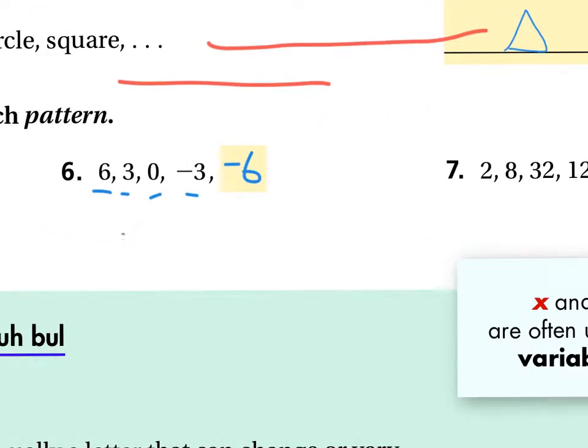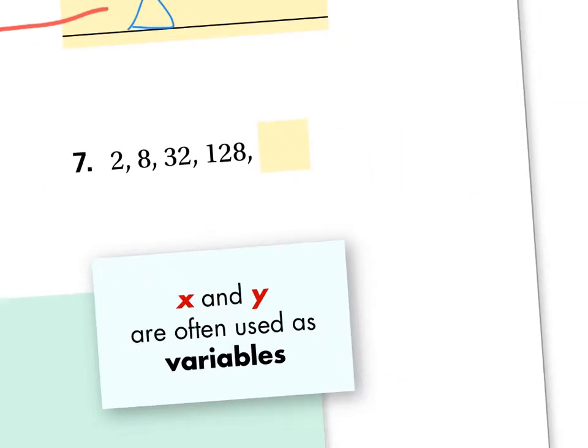Number seven: 2, 8, 32, 128. Is it 16,384? Is it 512? Are they both right? So explain.